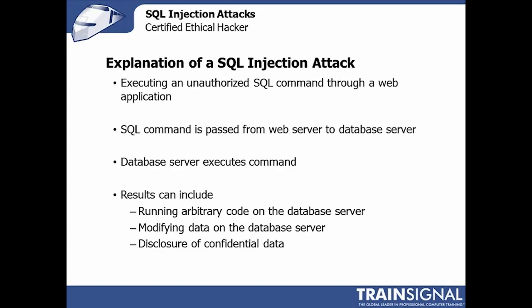When you get right down and look at it, the SQL injection attack is nothing more than passing some parameters or some unexpected data to a SQL server, usually through a web front end, a web form, or a URL. It's very common to see this type of attack mounted against a back-end database when you can't reach the back-end database directly — there's a firewall in the way, there's a tunnel in the way — but you can reach a web front end or an app front end that actually communicates with that SQL back-end.